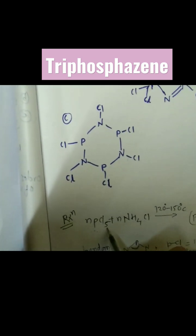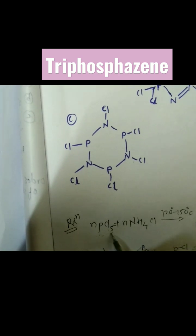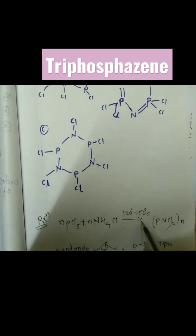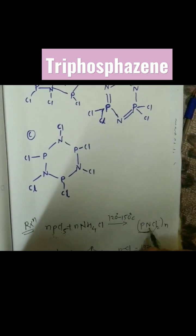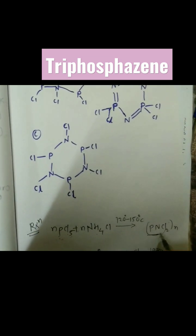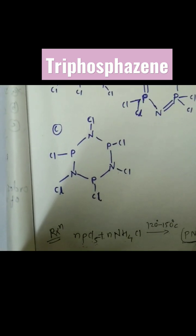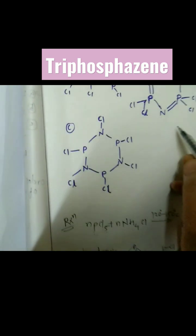n PCl5, that is phosphorus pentachloride, is reacting with ammonium chloride (NH4Cl) at temperature 120 to 150 degrees centigrade, which forms the triphosphazene structure. This forms poly molecules of triphosphazenes.